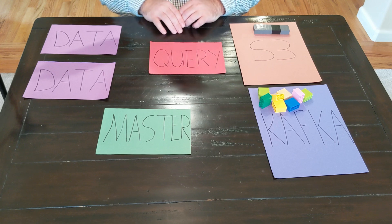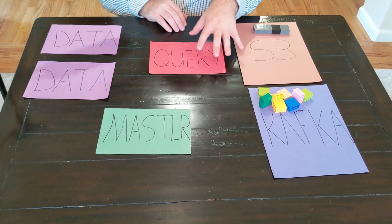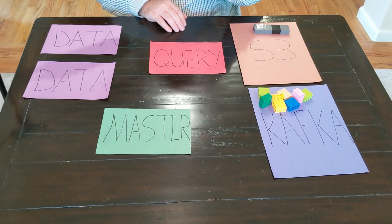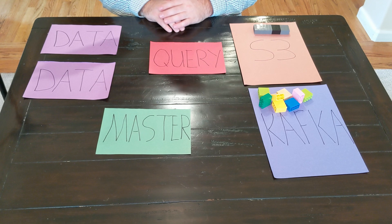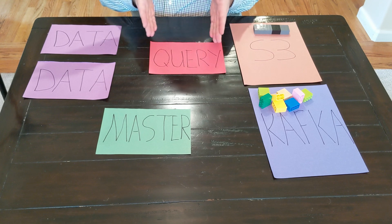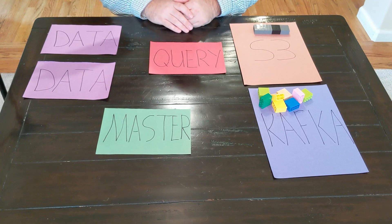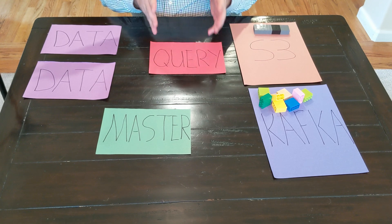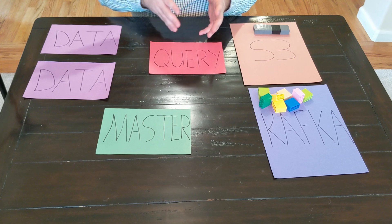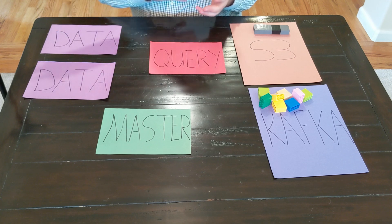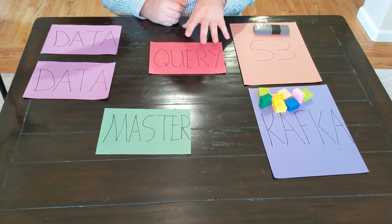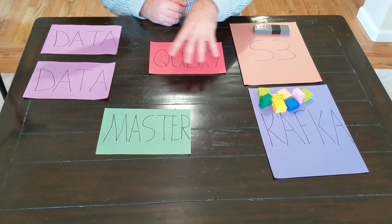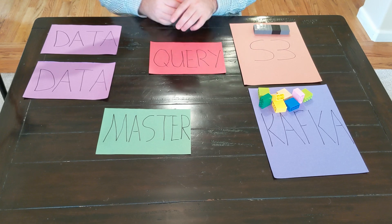Then we have our query server type. This is where we do our interactions. When we're a client and we're actually running a SQL query, our client will call into this query server type, and that query server type will then run the query for us and respond with those results. When that query actually runs, the data is not actually stored here.